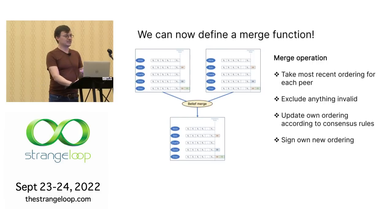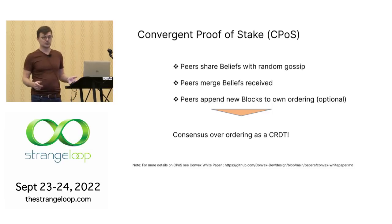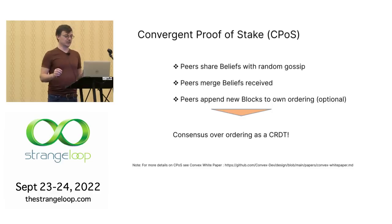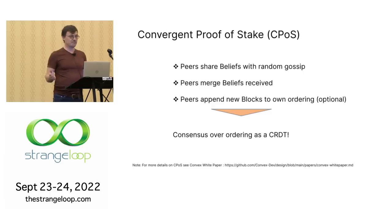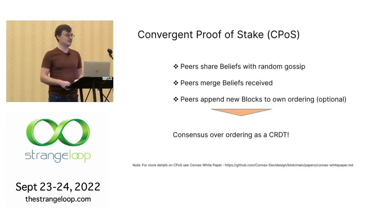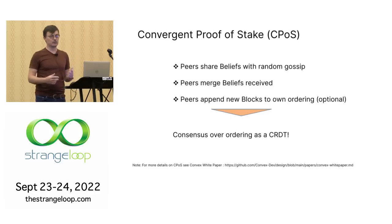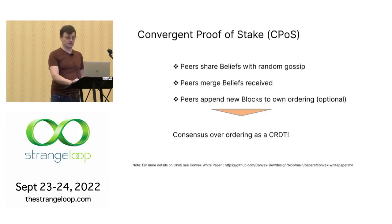This is basically the magic — we can now build a CRDT. This combined algorithm we call convergent proof of stake. It's really simple: peers share these beliefs with random gossip, they merge the beliefs they receive through the merge function, and optionally, if they have any new transactions, they can append new blocks to their own ordering. Then they just send out their latest belief to other peers, and the CRDT happens, creating consensus over ordering. We get all of those lovely CRDT properties.